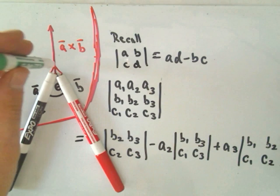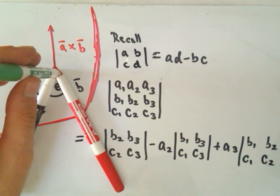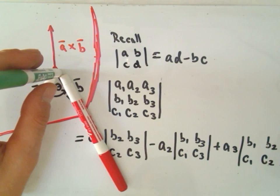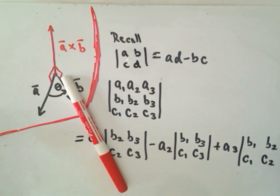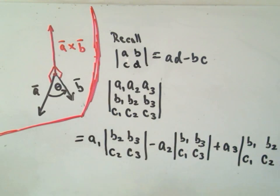So if vector A and B were in the plane, then the cross product A cross B would actually be sticking straight up out of the plane. So this new vector would be perpendicular to both the black vector and the red vector. So it's orthogonal to both vectors. The cross product is orthogonal to both of the original vectors. So that's something important to keep in mind.